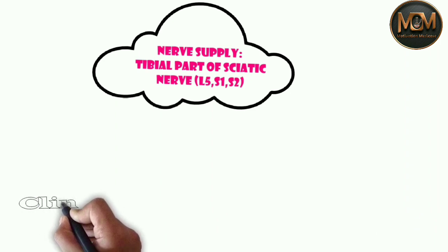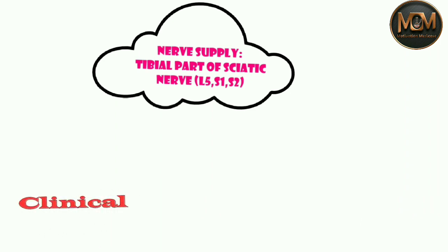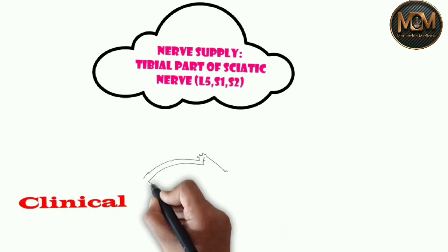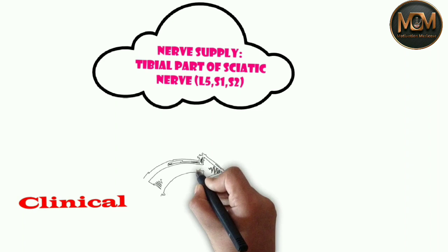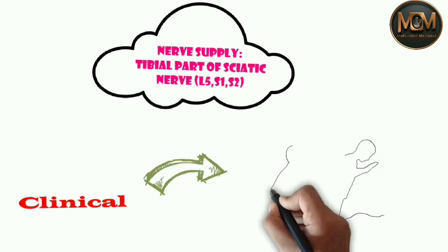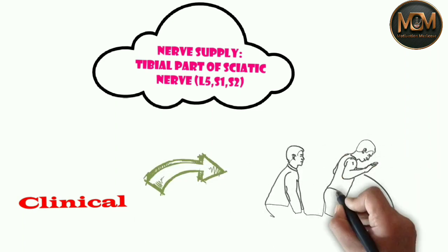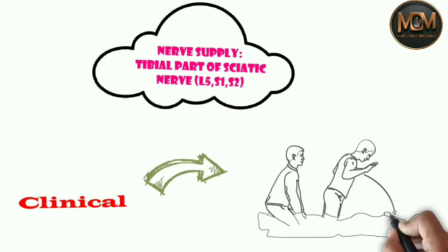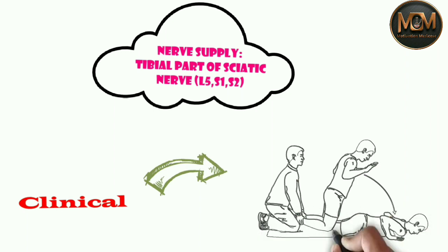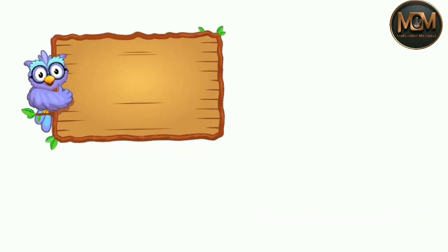Finally, the clinical relevance of the hamstring muscles: if the hamstring muscles are paralyzed, the person tends to fall forward because the gluteus maximus cannot maintain the necessary tone to stand upright.